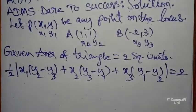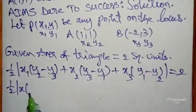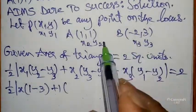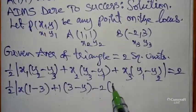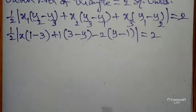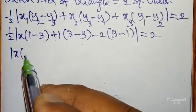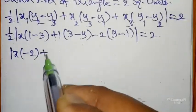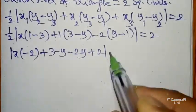Now you can substitute the values: 1/2 into mod x₁ is x into y₂ is 1 minus y₃ is 3 plus x₂ is 1 into y₃ is 3 minus y₁ is y plus x₃ is -2 into y₁ is y minus y₂ is 1 equals 2.